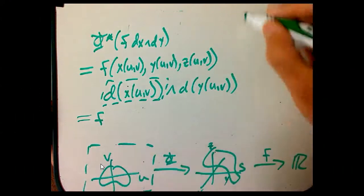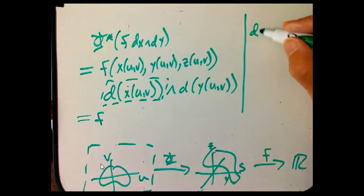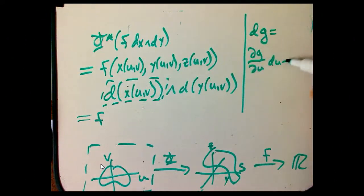So we have, and the coordinates are u and v. So d of any function, let's say g, is going to be the partial of g with respect to u du plus the partial g with respect to v dv.